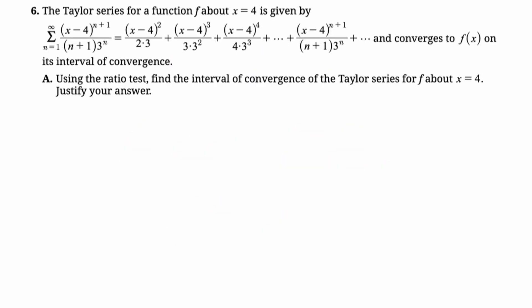So first up, the Taylor series for a function f about x equals 4 is given by the sum from 1 to infinity, the quantity x minus 4 to the n plus 1 over n plus 1 times 3 to the n. Then they write out a bunch of things. It tells us that it converges to f of x on its interval of convergence.